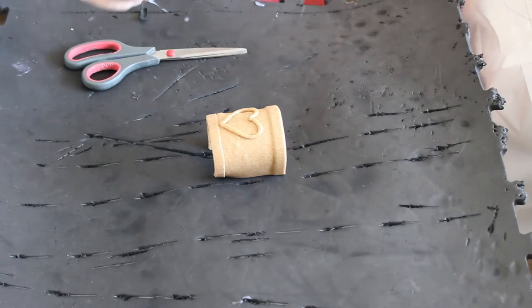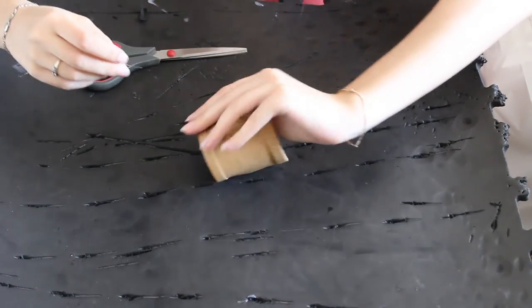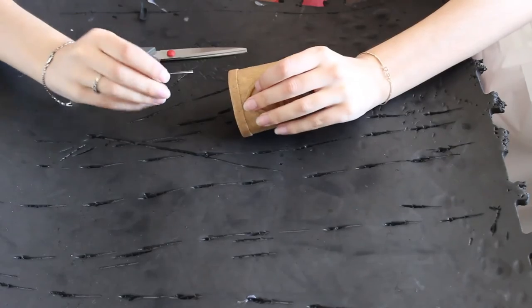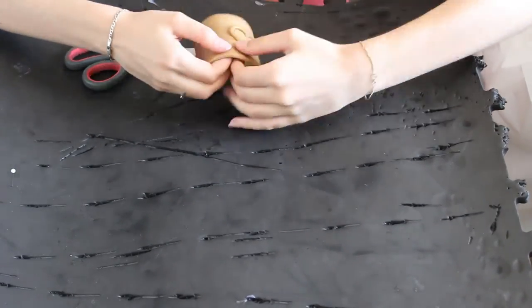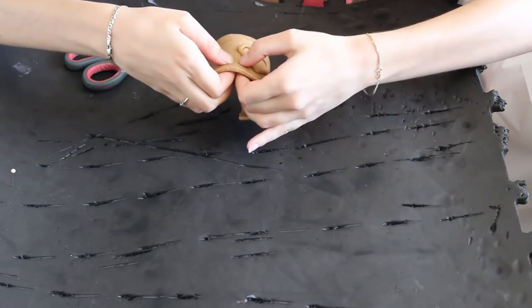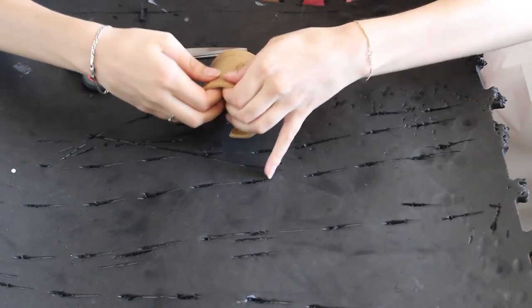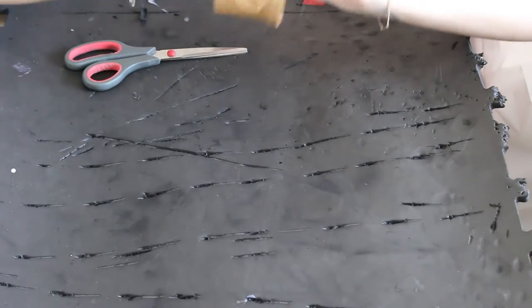If you get an air bubble don't worry it's not the end of the world. You can take a regular sewing pin, poke it into the worbla right where the bubble is, push the air out, flatten it down, no more air bubble.